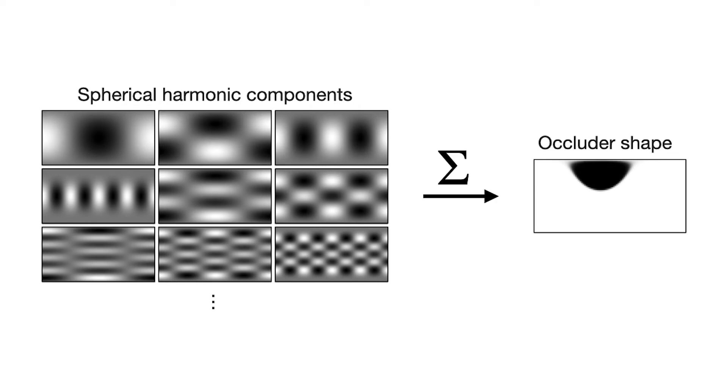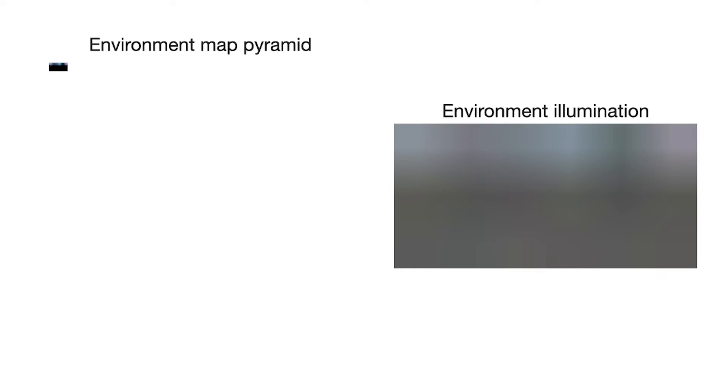We independently parameterize the occluder shape for each image using spherical harmonics, and we represent the environment illumination as an image pyramid in spherical coordinates.